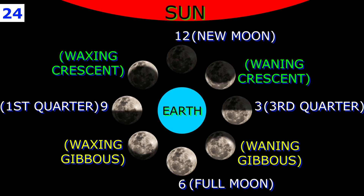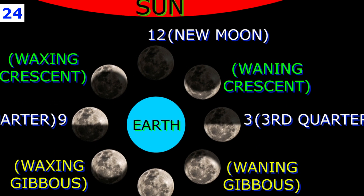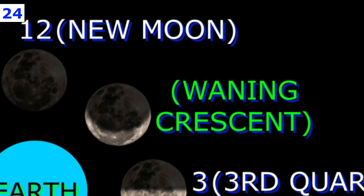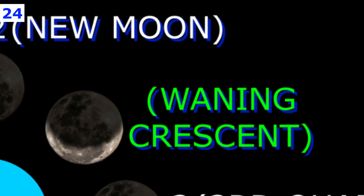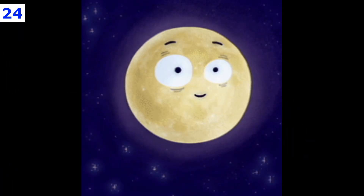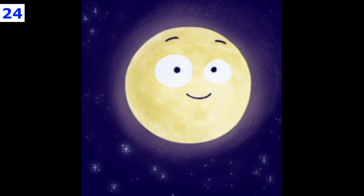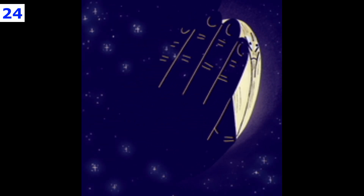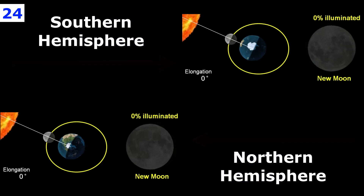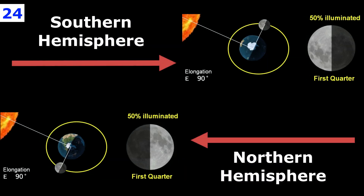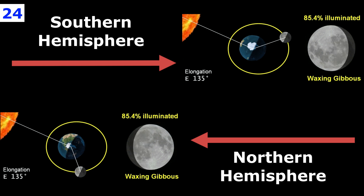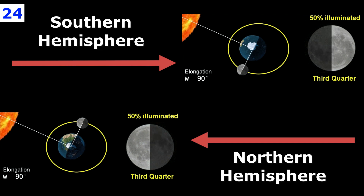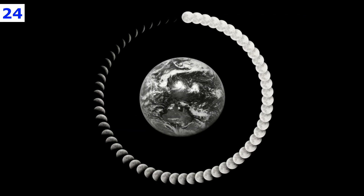During the waning crescent phase, that crescent roll shape is back, except now it's shrinking. As the moon travels back to its closest point to the sun, the lit portion that we can see gets smaller each day. When it disappears from our view, it is a new moon, and the cycle begins again.